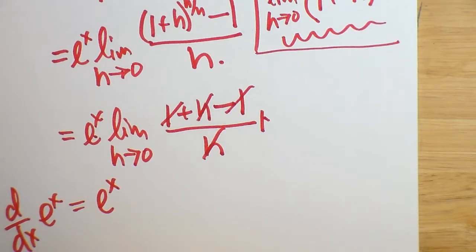E to the x is its own rate of change. The derivative of E to the x is E to the x. There is no other function I'm aware of that behaves quite like this one.